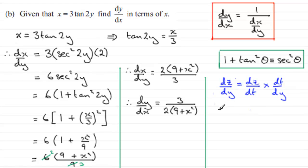So if I let z equal tan 2y and I want to differentiate this with respect to y, if I say t equals 2y, then z must be equal to the tan of t.